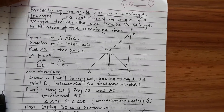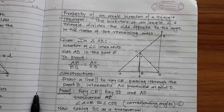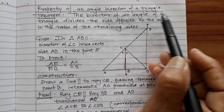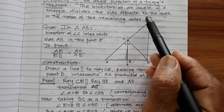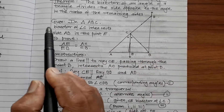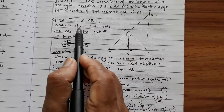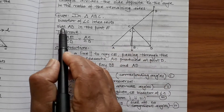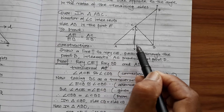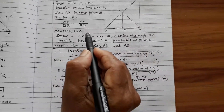Now I will explain another property — the property of an angle bisector of a triangle. Theorem: the bisector of an angle of a triangle divides the side opposite to the angle in the ratio of the remaining sides. Given triangle ABC, the bisector of angle C intersects side AB at point E. To prove: AE upon EB is equal to AC upon CB.